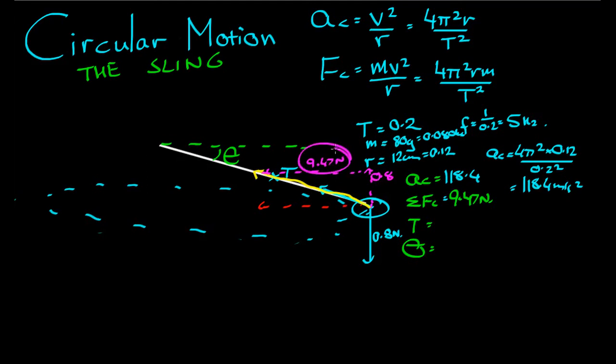Since we have two sides to this triangle, we can figure out the third side. The third side is the square root of 9.47 squared plus 0.8 squared, which comes to 9.50 newtons. So tension is equal to 9.50.